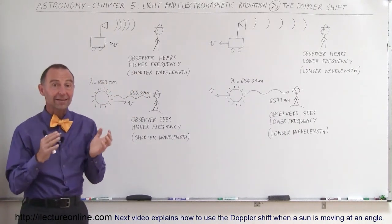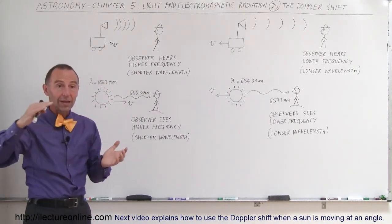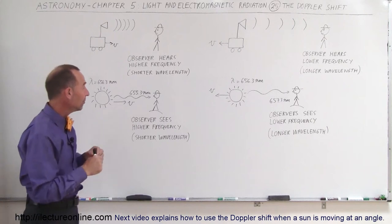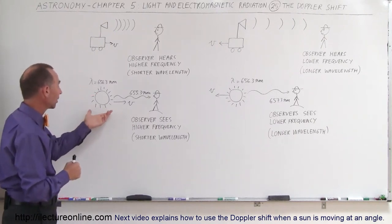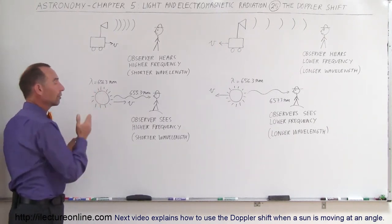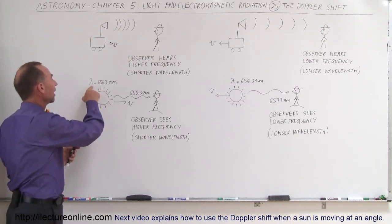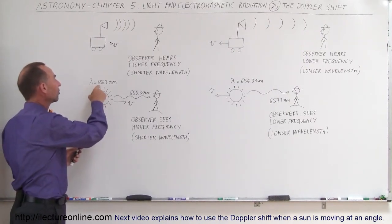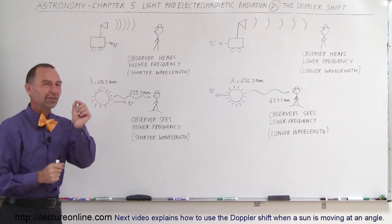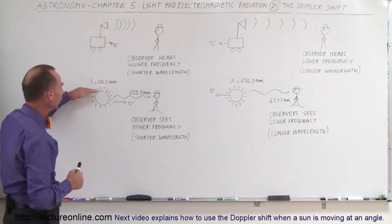Turns out light is exactly the same way. Light is waves. It's energy being carried by waves and so let's say we have a source like a star and let's say that we look for a specific wavelength of light. Let's say the H alpha line with a wavelength of 656.3 nanometers. That's a really nice reddish color coming from hydrogen.